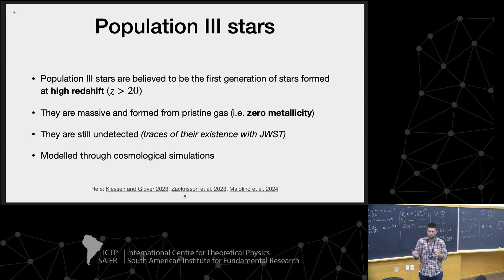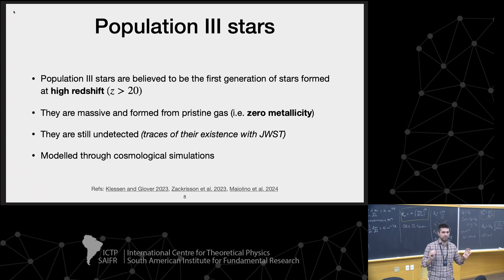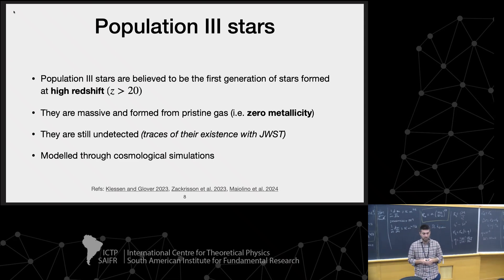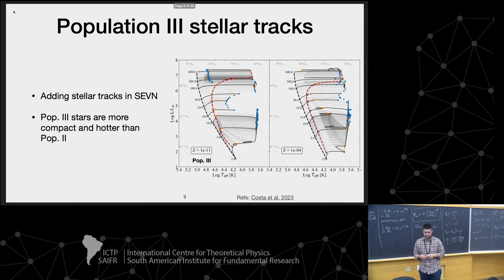However, there are traces of their existence, which the James Webb Space Telescope has found. I'm putting some references you can follow if you are curious about these traces. However, we do not have statistics — we do not know, for example, their initial properties. We do not know the mass distribution of population three stars. So we need to model them through cosmological simulations.